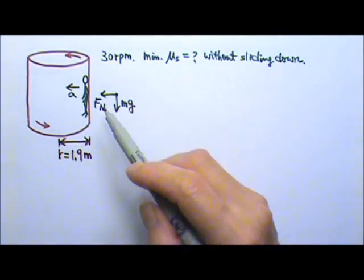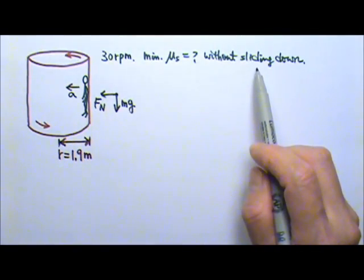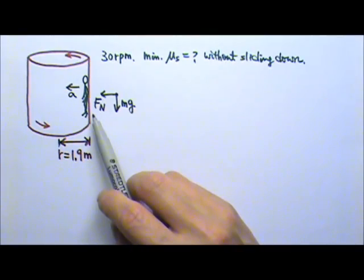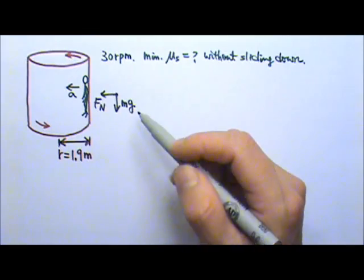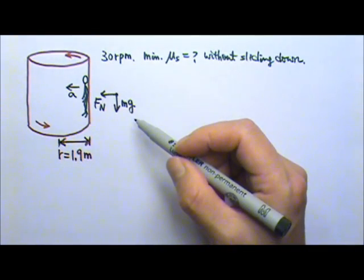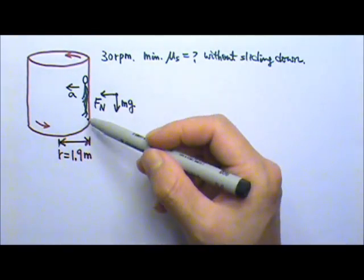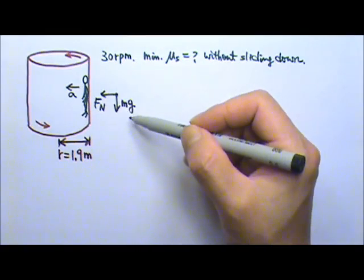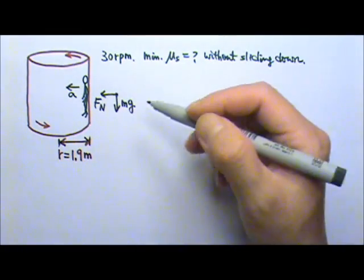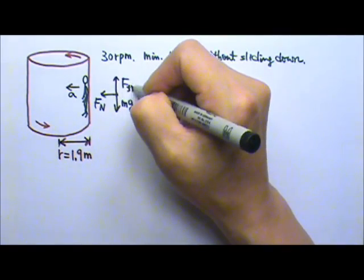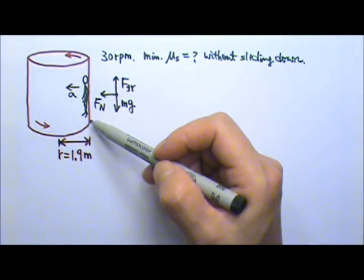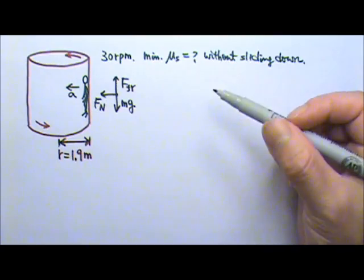And there is friction, but if the person is not sliding, that means it's static friction, which is against the tendency to slide. This person has a tendency to slide downward because of the Mg. So the static friction must go upward. The person is not touching anything else, so we're done with the force diagram.